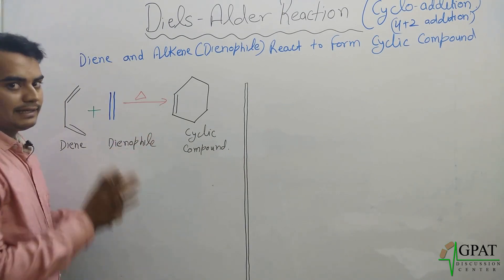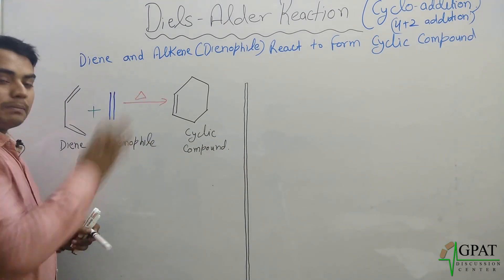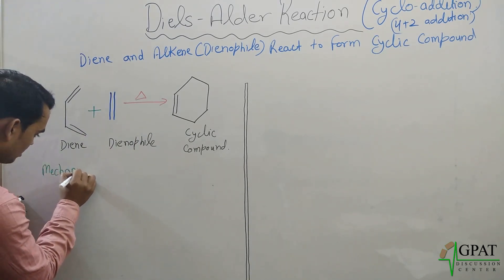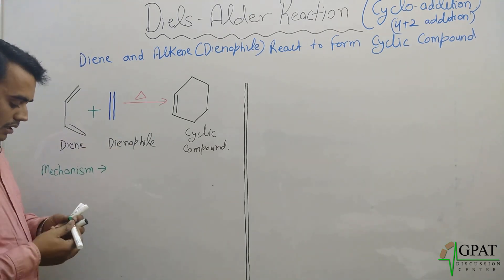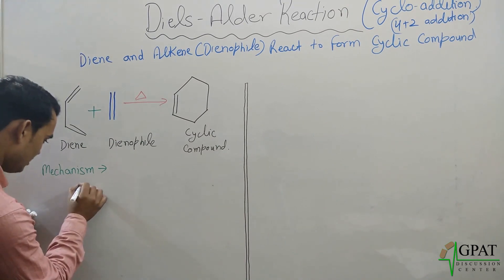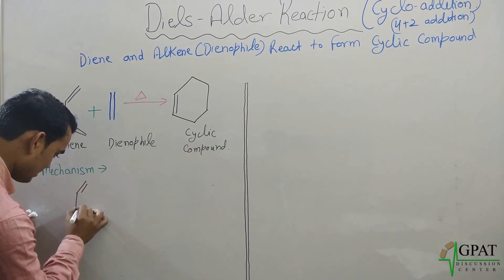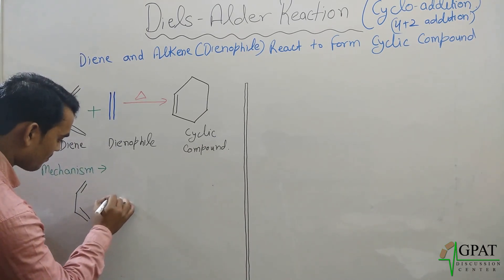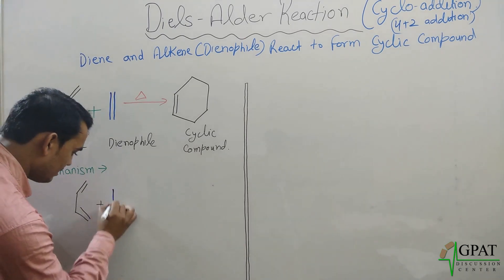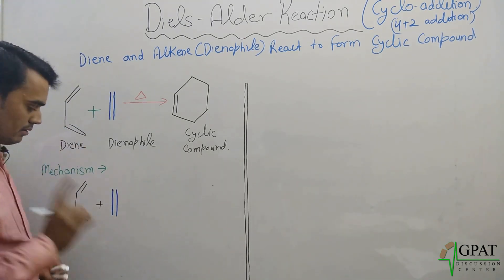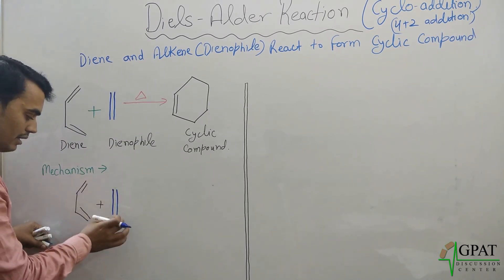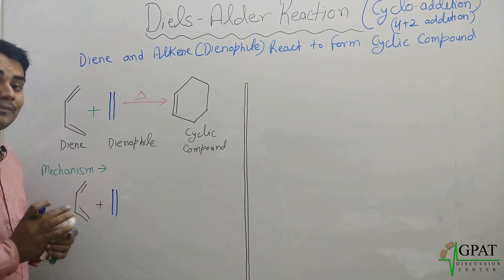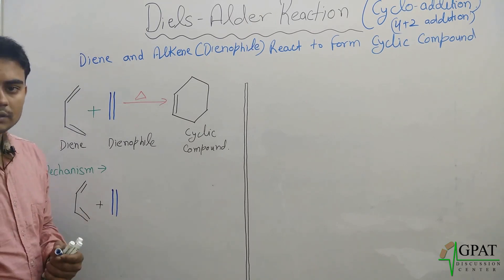This is the Diels-Alder reaction. What is the mechanism behind this reaction? Firstly, the diene has two pi bonds, and the alkyne has one pi bond. Both species have pi bonds, so they repel each other and the reaction cannot proceed under normal conditions.